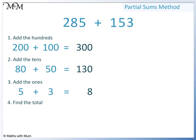Finally, we find the total. 300 plus 130 equals 430. Plus 8 equals 438. So 285 plus 153 equals 438.